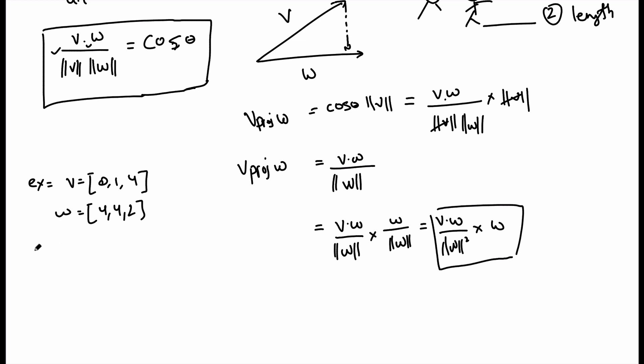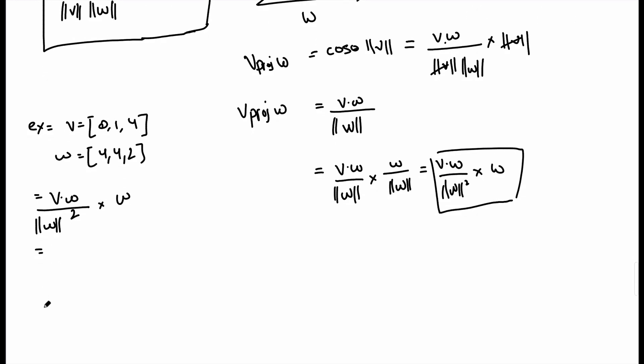I'm projecting v onto w. So the formula is again v dot w divided by ||w|| squared and multiply that by w. What's v dot w? That's 4 into 0, so that's 0. 4 into 1, that's 4. And 4 into 2 is 8. So 8 plus 4, that's 12.